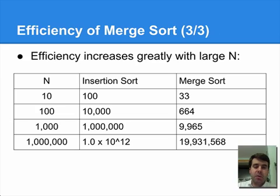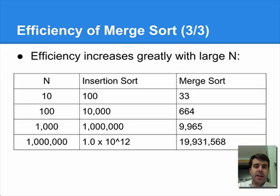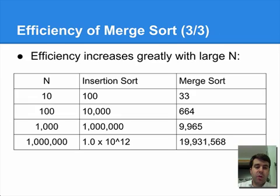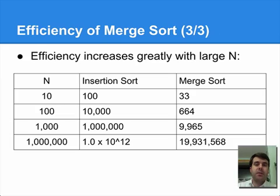And that really starts to add up. Looking at this table, the numbers show how many times the loops in merge have to run. For an array of size 10, the inside loop in insertion sort runs 100 times, but the inside loop in merge sort only runs 33 times — about three times fewer. Notice how, as the size of n increases, merge sort gets better and better, to the point where for an array of size 1,000 — which isn't very big — merge sort is almost 100 times faster. For a million elements, it's even faster than that. The bigger your array, the bigger the payoff you get from merge sort.